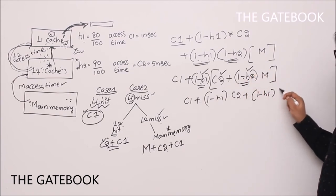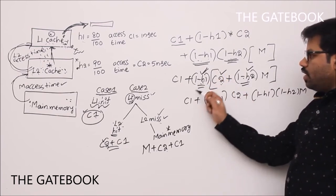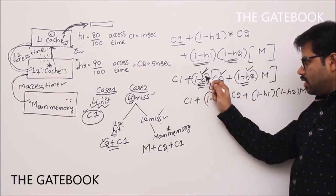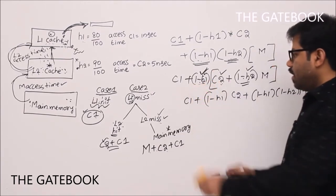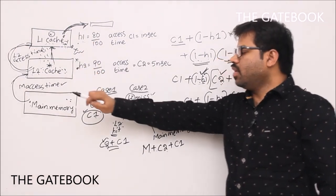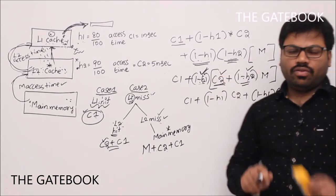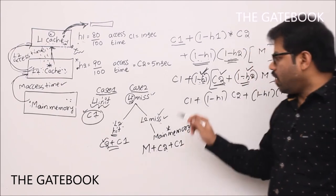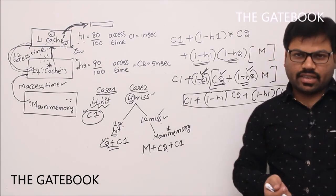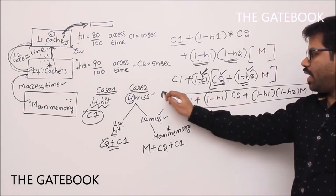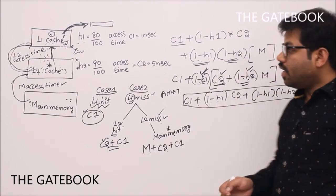When L1 cache misses, we are definitely transferring data from L2 to L1, so C2 is compulsory in that case. This is the important formula for multi-level cache: Average Memory Access Time = C1 + (1−H1)×C2 + (1−H1)×(1−H2)×M. Remember this formula — it can answer any GATE question on multi-level cache access.